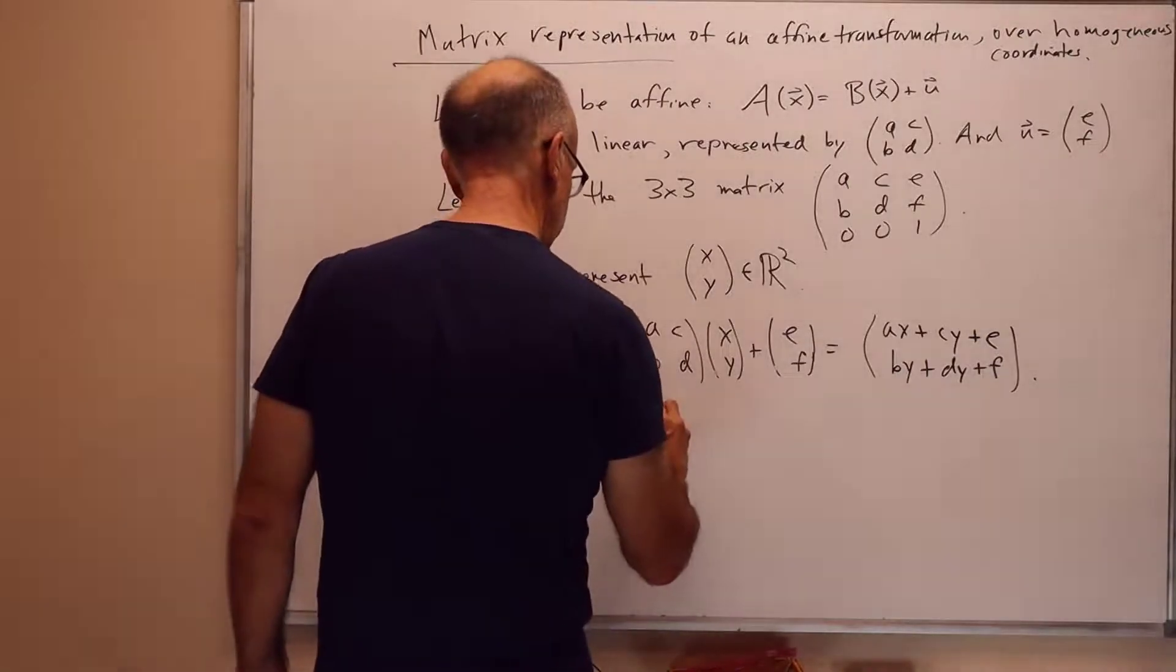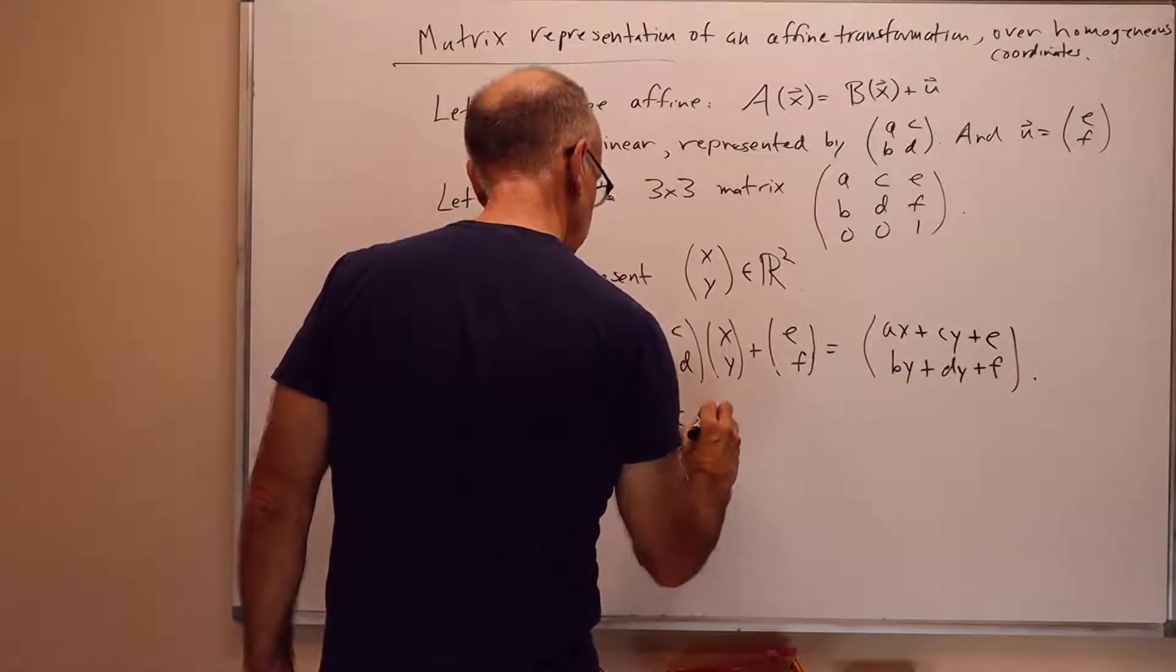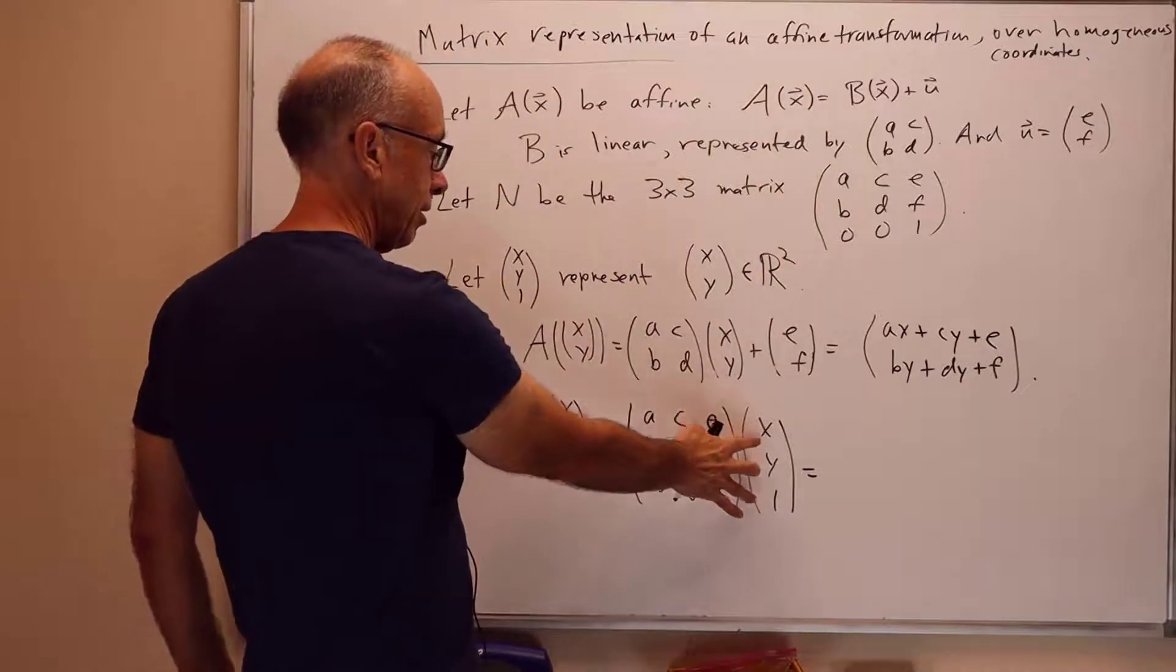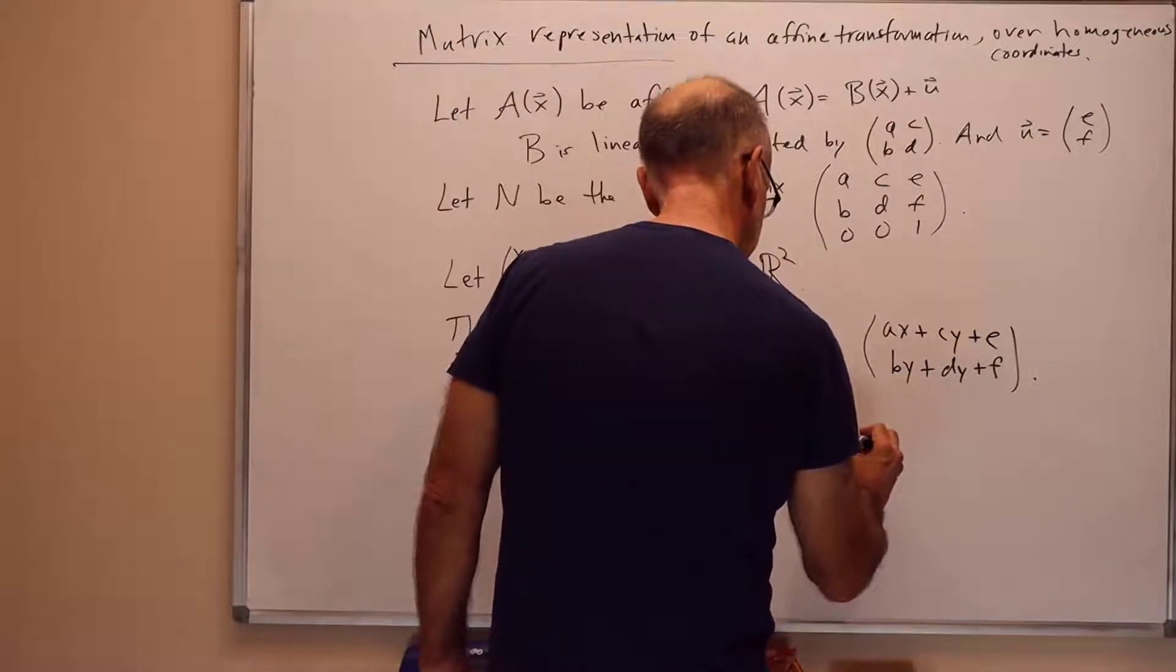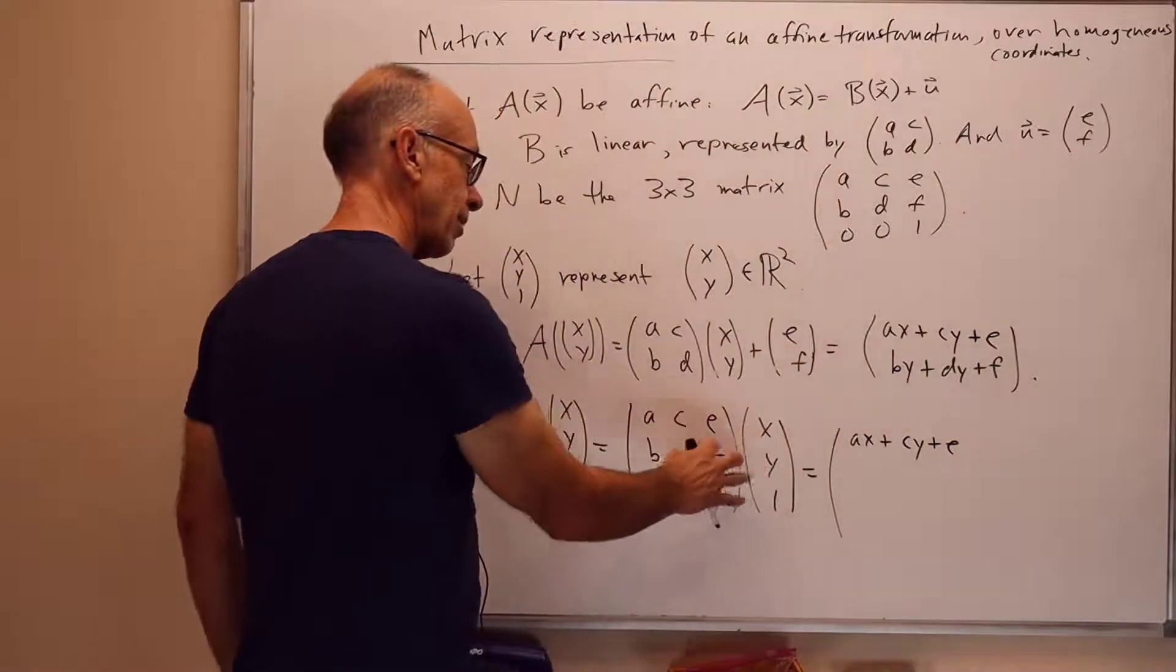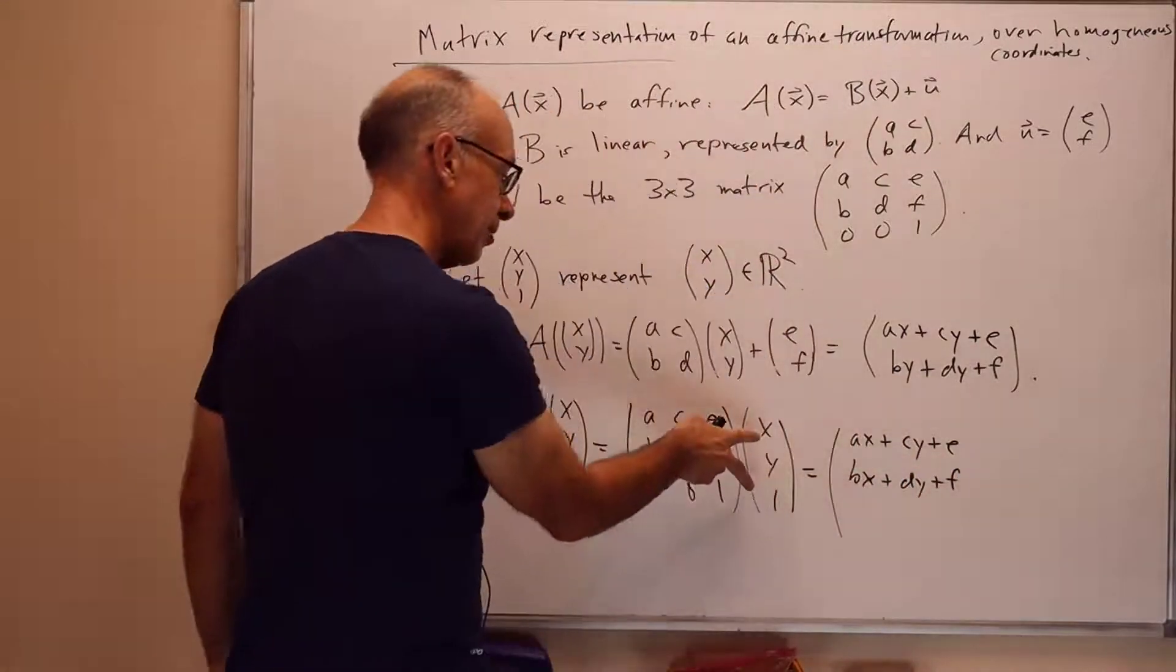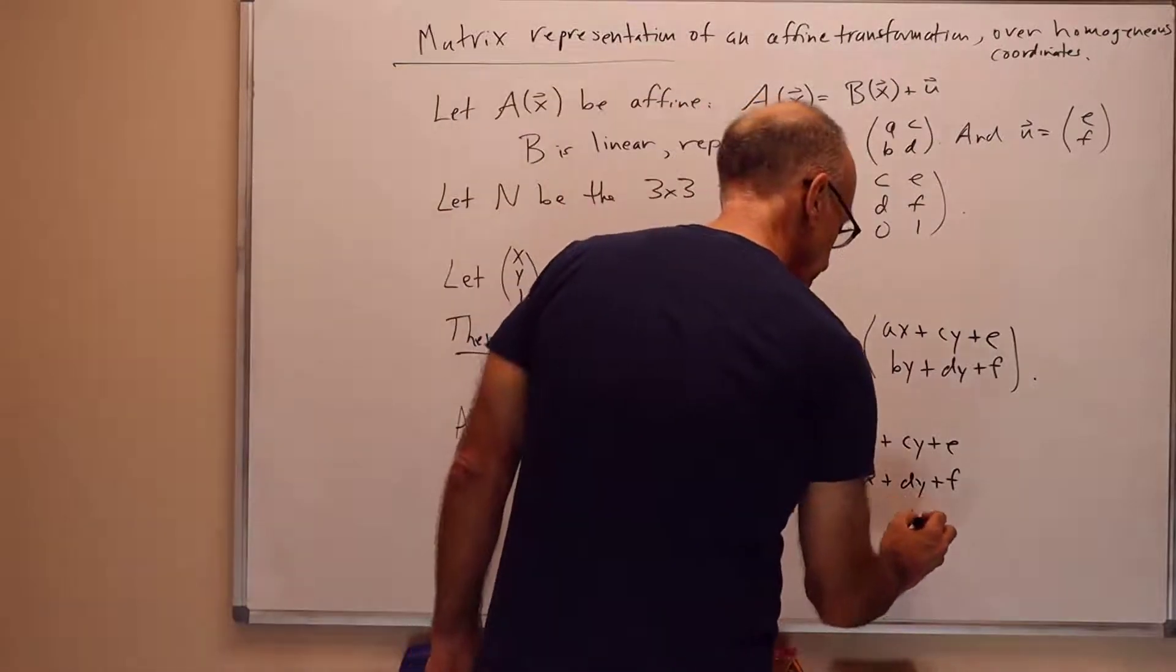And that gives us the image of x, y under the transformation A. On the other hand, if we take N, and we take N times x, y, 1, well, what's that equal to? That's equal to AB0, CD0, EF1 times x, y, 1. And now we take the inner product of the column vector x, y, 1 with ACE, and we get Ax plus Cy plus E. And we take the column vector inner product of the second row. We get Bx plus Dy plus F.